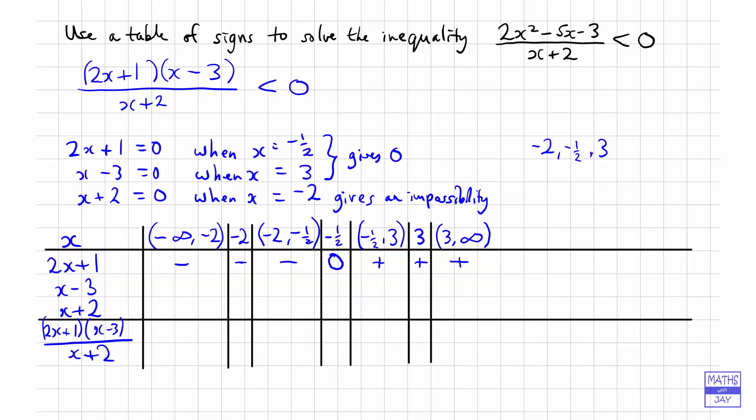Then we come to x minus 3. So that's going to be 0 when x is 3. And similarly, when we looked at the first one, we had the same sort of thing happening, didn't we? Minuses to the left, and then a plus to the right.